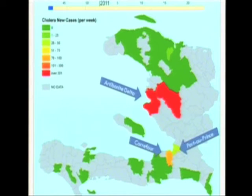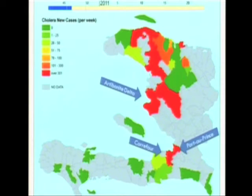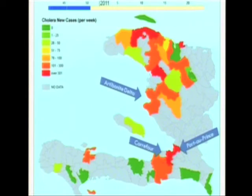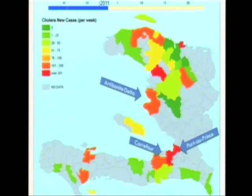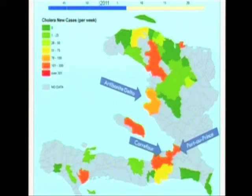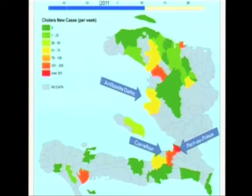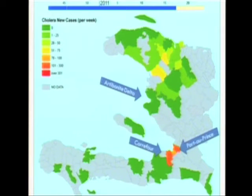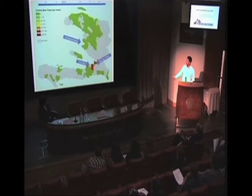I'm going to show you a quick movie of the evolution. The outbreak started in the Artibonite Delta and it spread north and northwest. That spread was mainly due to cases fleeing to their home communities. It remained really high in Port-au-Prince, mainly due to the high population density — more than a third or half of the population lives there.